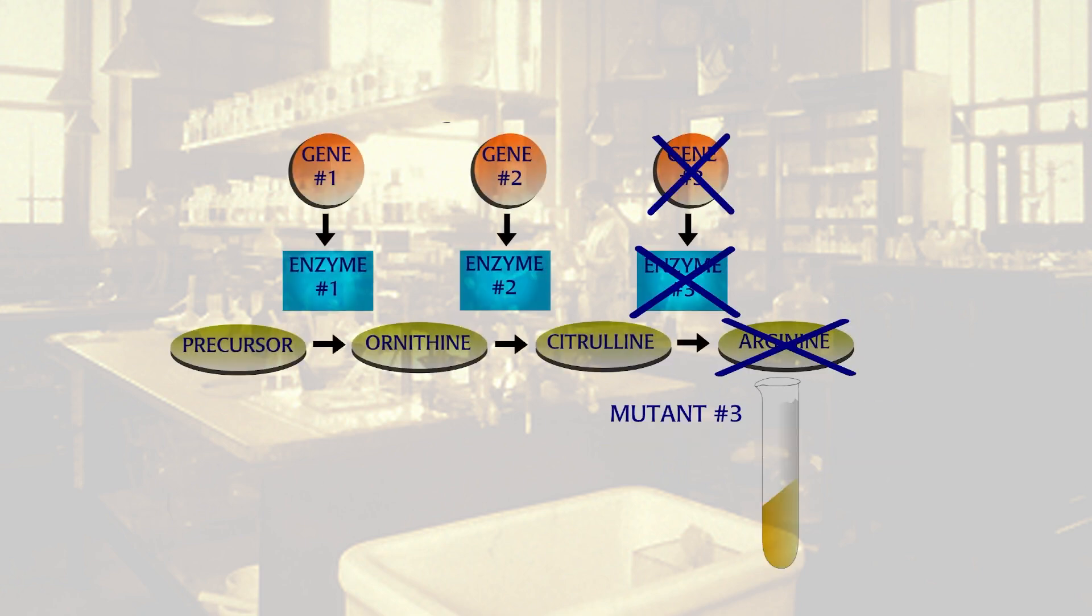And a genetic mutation in mutant 3 affected the final step of arginine synthesis, the conversion of citrulline to arginine. By adding arginine as a supplement, the mutation was complemented and mutant 3 could grow.